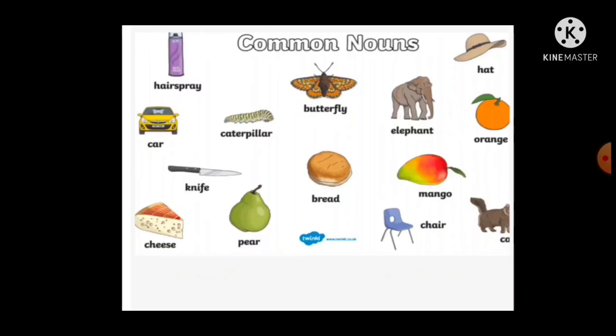Here are some examples: car, caterpillar, butterfly, has prey, elephant, orange, hat, knife, bread, mango, pear, cheese, chair, cat. These are coming under the common noun.